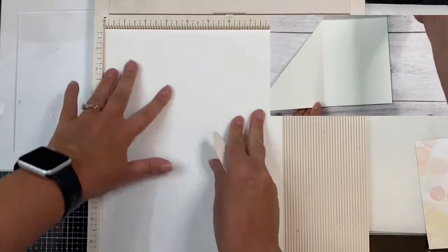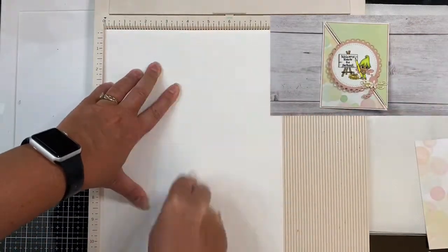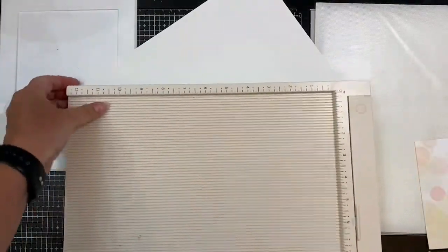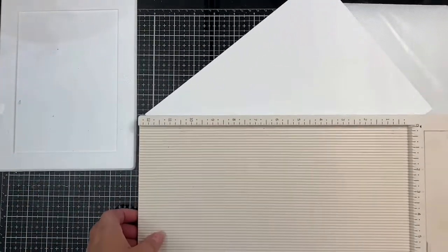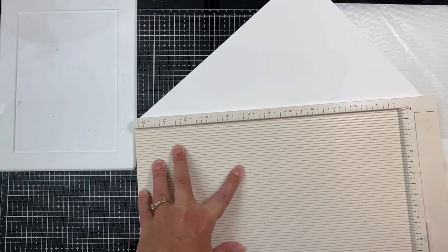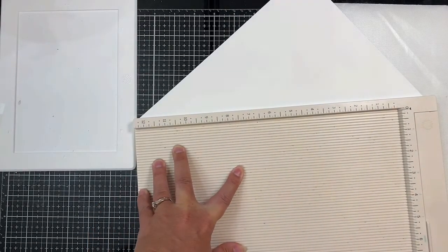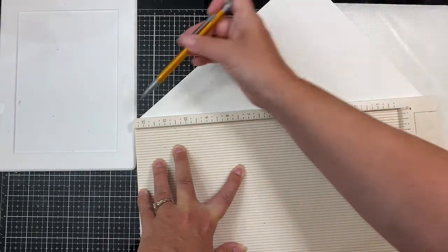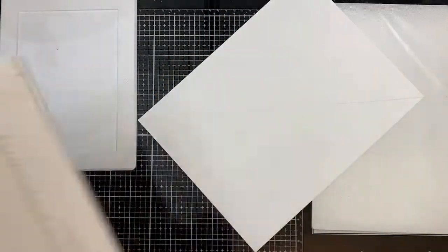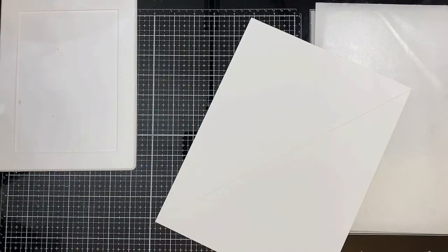This next card is a fun diagonal fold card and I'm going to show you how to create two card bases at once. You'll start with a sheet of heavyweight cardstock and score it down the middle first at five and a half inches and then at four and a quarter inches. Next you'll need something to mark from corner to corner diagonally so I'm using the edge of my scoreboard and I'm lightly marking it with a pencil.